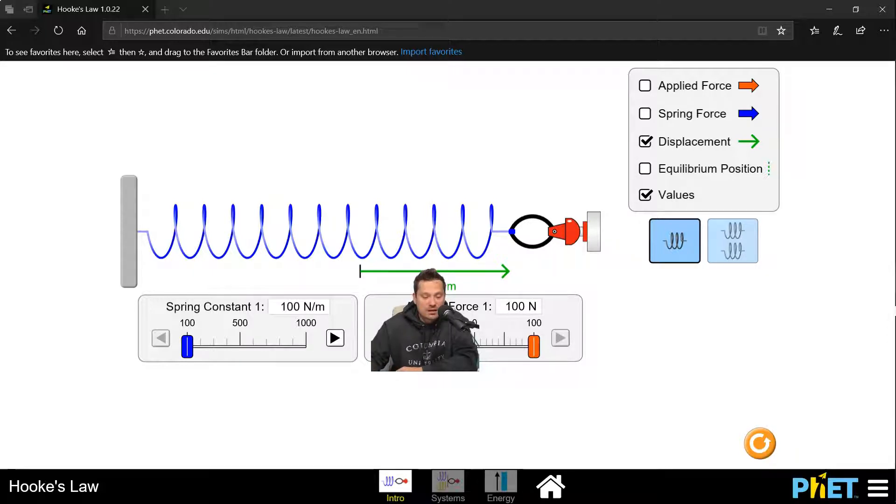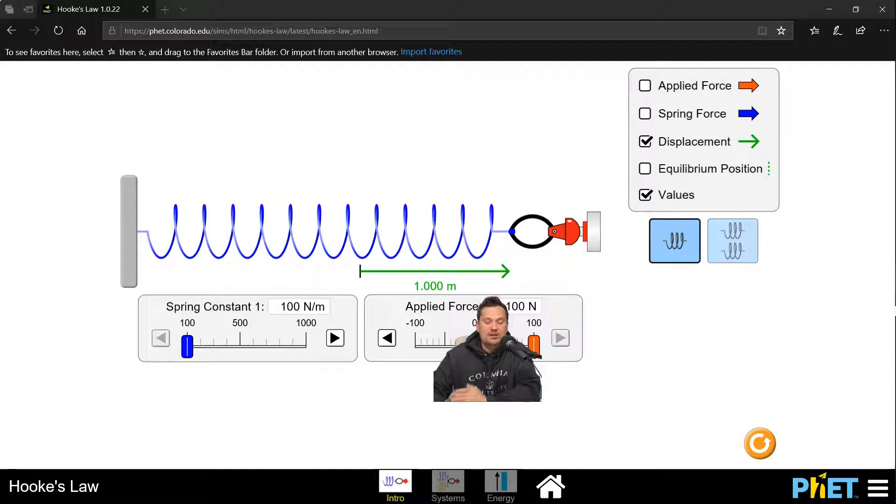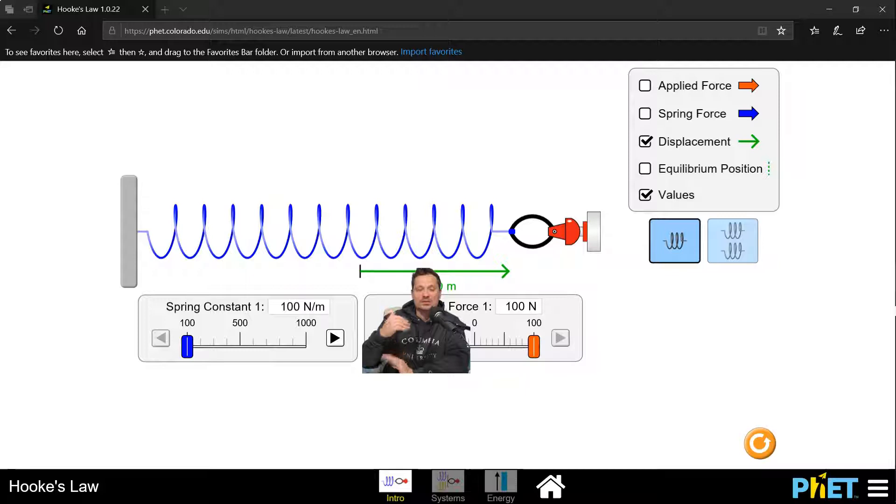So when we say here in the spring constant that it has a value of 100 newtons per meter, what it means physically is you have to apply a force of 100 newtons to get a stretch of 1 meter. So then it becomes 100 newtons per 1 meter. That's what the spring constant means.